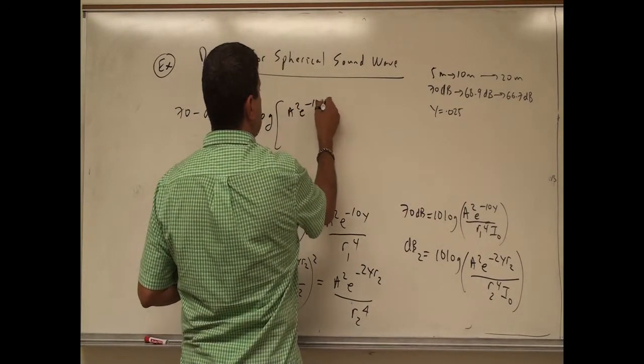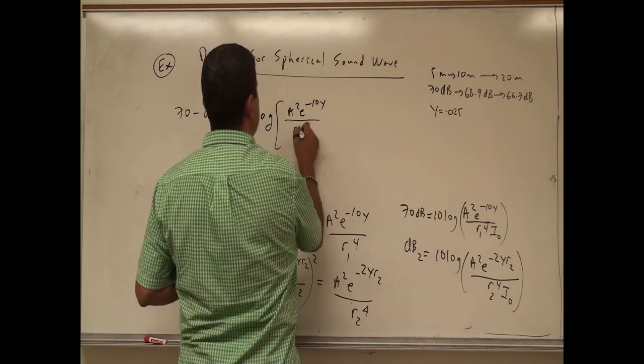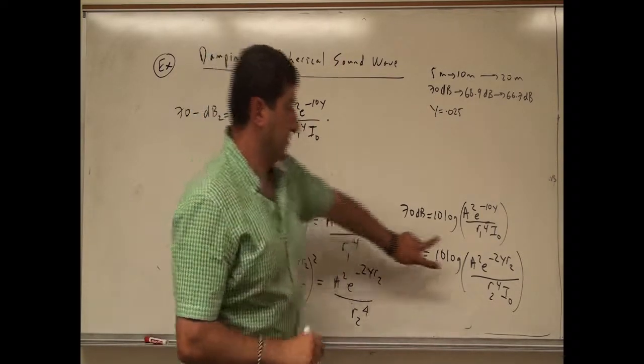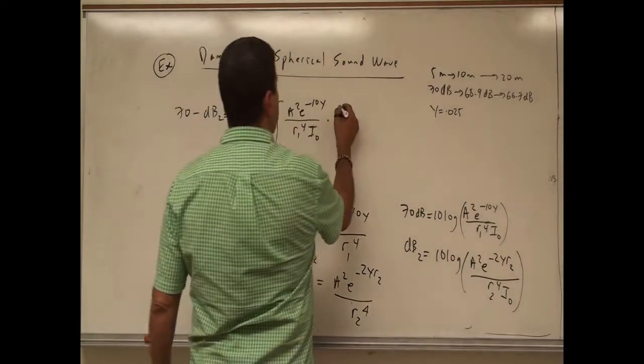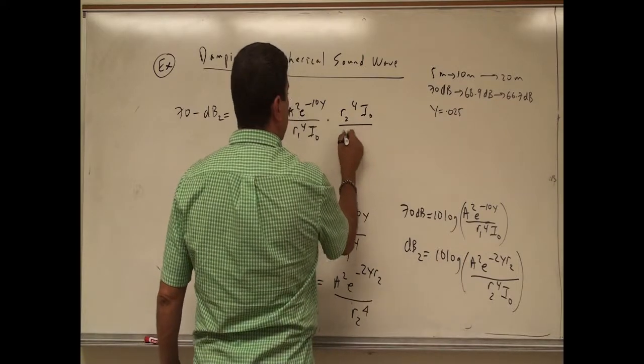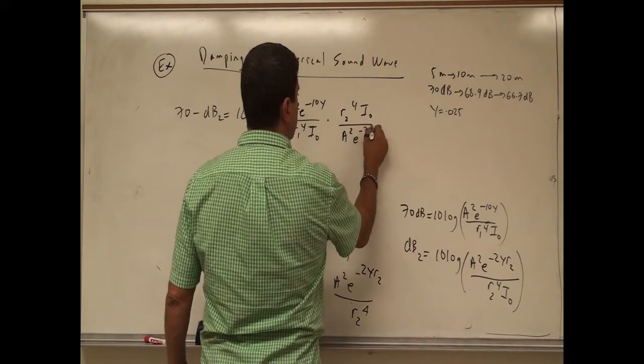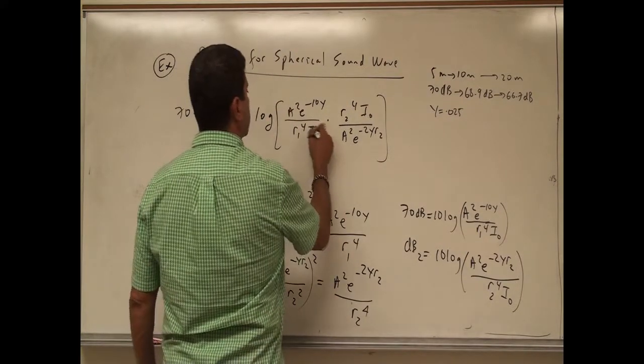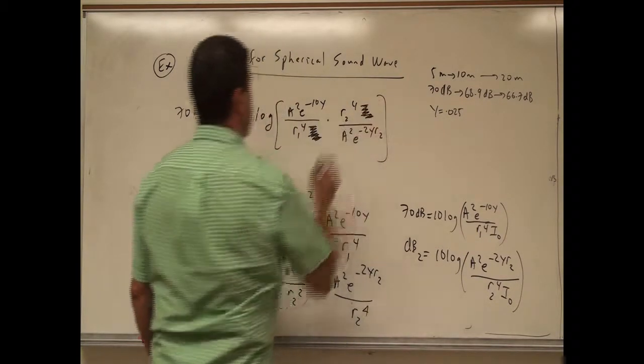So then I'm going to have here log of this one here, A squared E to the minus 10 gamma over R1 to the 4th, I0 times the reciprocal of this one. So then it's going to be R2 to the power 4th, I0 over A squared E to the minus 2 gamma R2. So the I0 is going to cancel again.